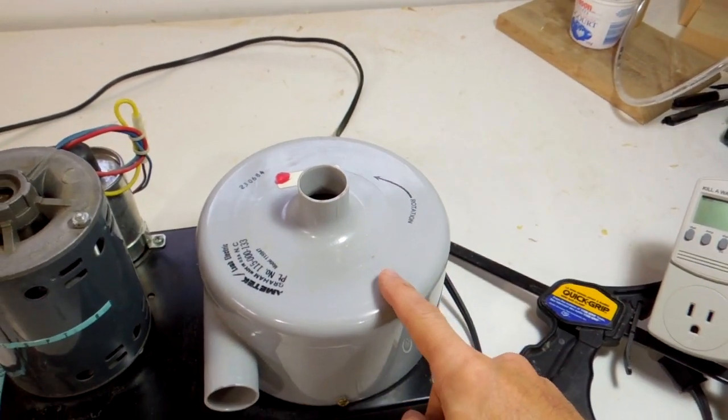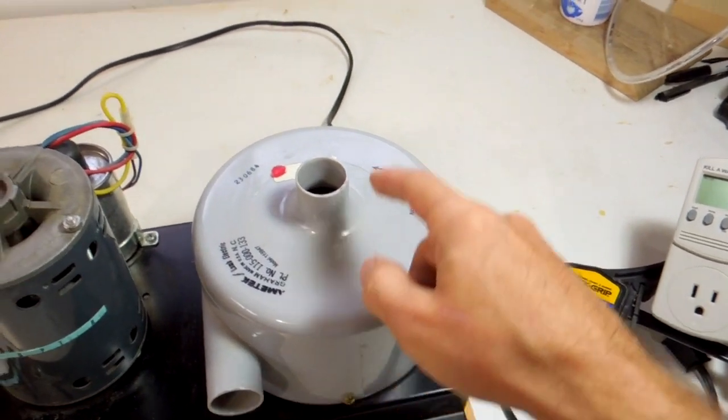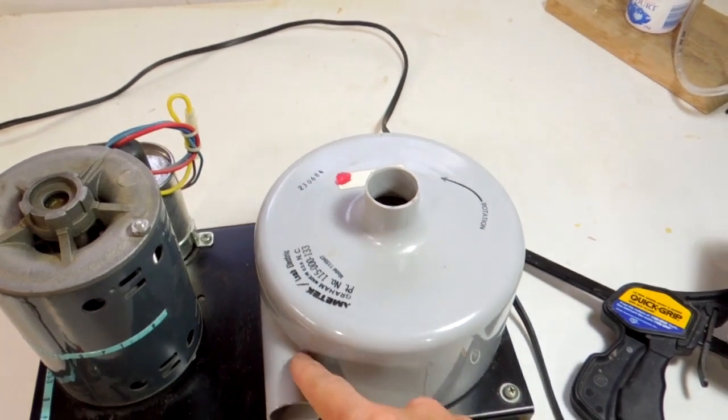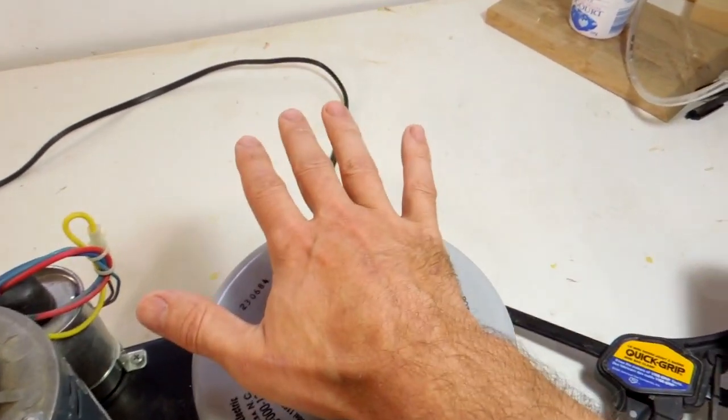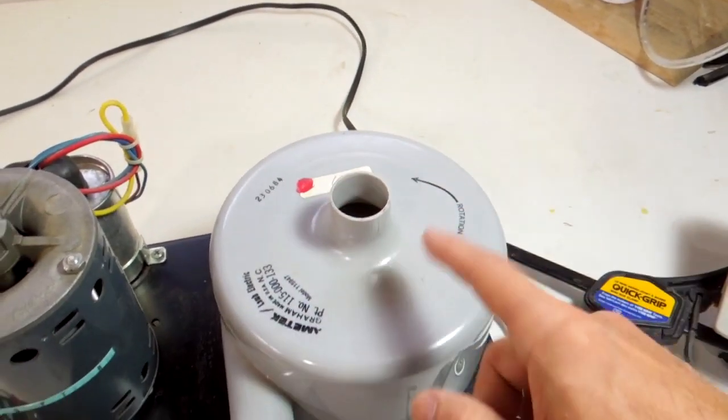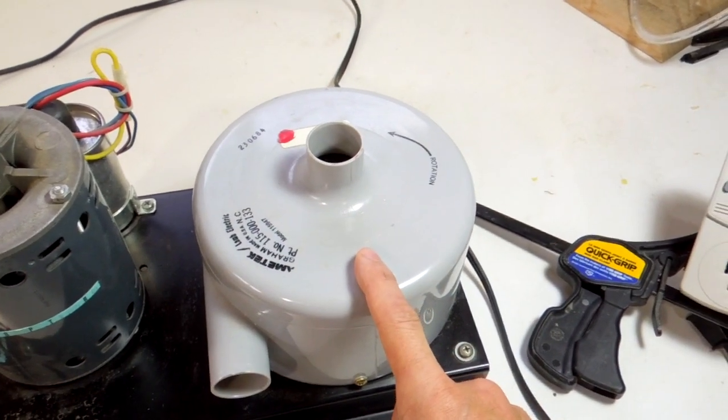The reason the blower needs more power when there's more air flow is whenever new air flows in here that has to be accelerated round and round and shot out here. Whereas if I plug it up the same air can just circulate around and around and around. So there's much less work the blower has to do.